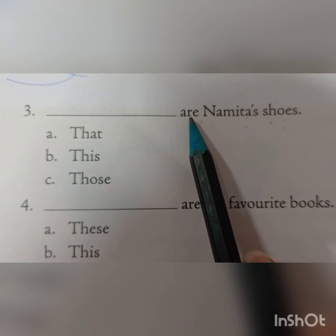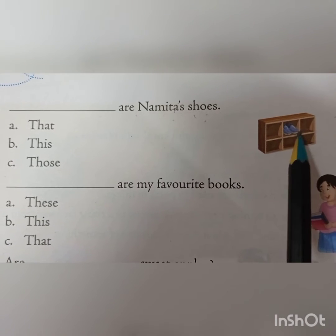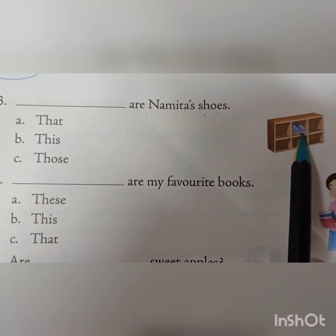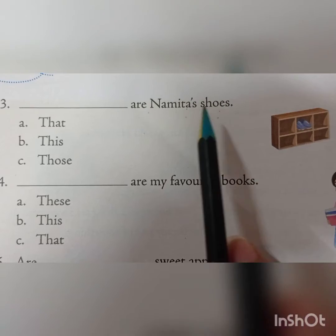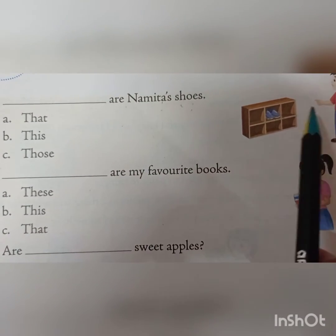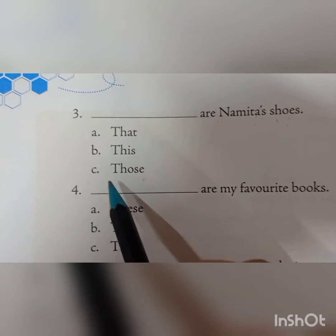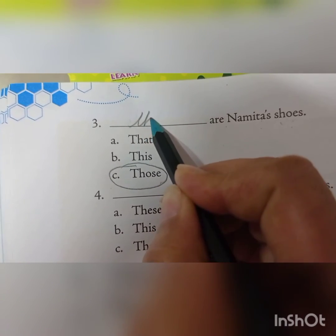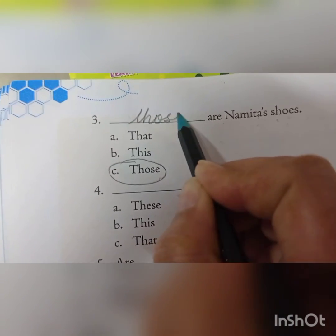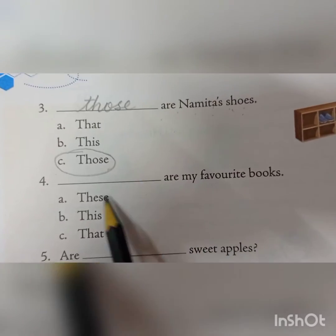Number three: blank space — Namita's shoes. 'Shoes' is plural, and they are far, so we use 'those'. Circle that and write T-H-O-S-E. Those are Namita's shoes. Clear?